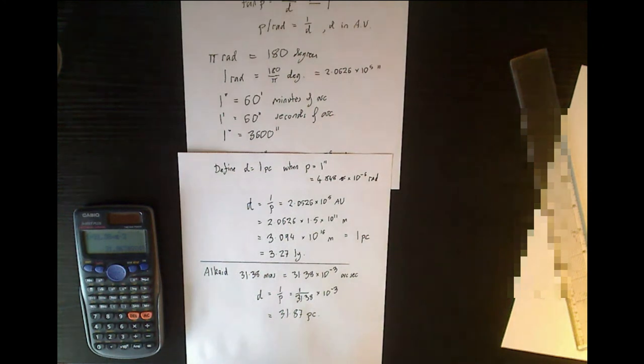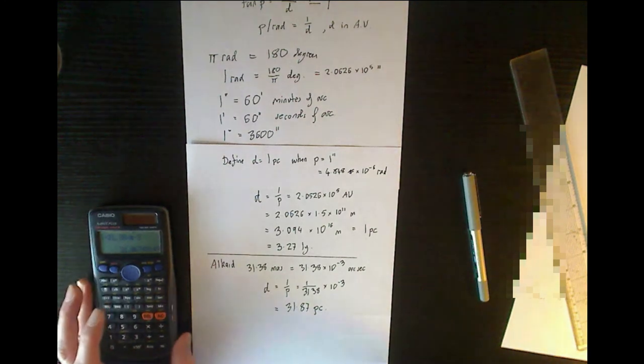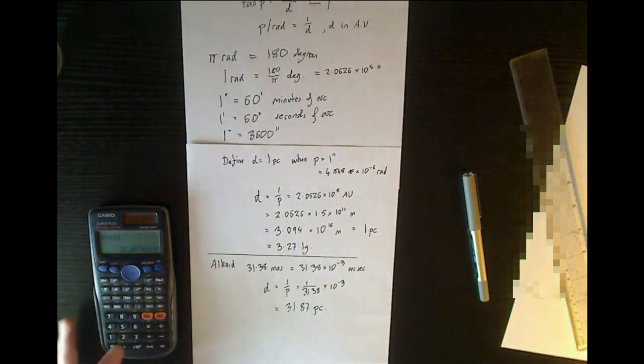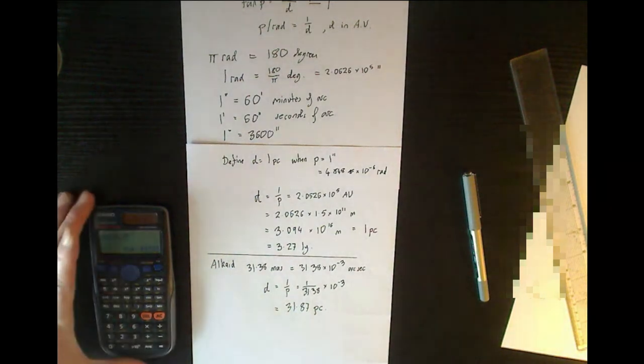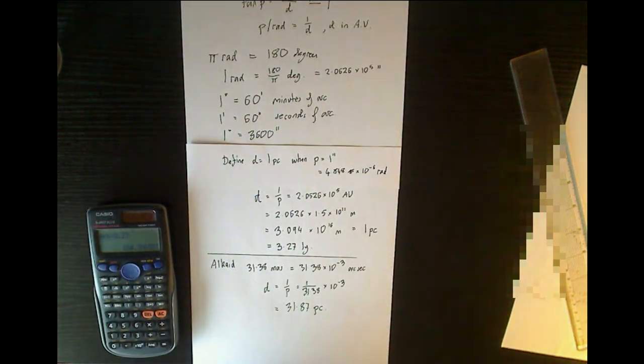So astronomers like to use parsecs because in practical terms when they're measuring distance, they will obtain an angle in arc seconds, and then it's very easy to turn that into parsecs. Of course, finally, if you take the 31.87 and multiply that by 3.27, then you get 104 light years.